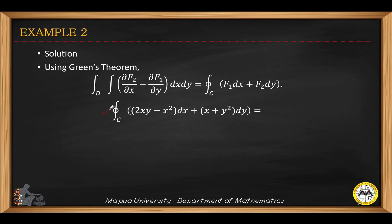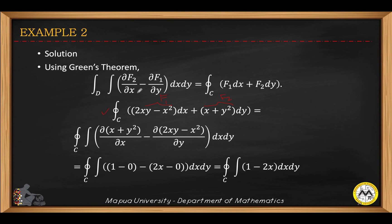So this is the given integral. We will take this as F1, and this is our F2. We apply the right-hand side — the double integral on the right-hand side. So this is your F2, and then this is your F1.